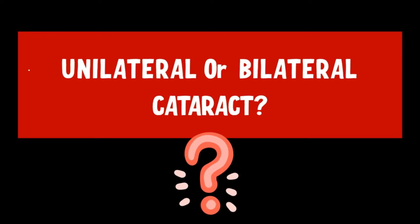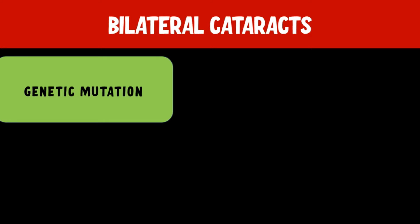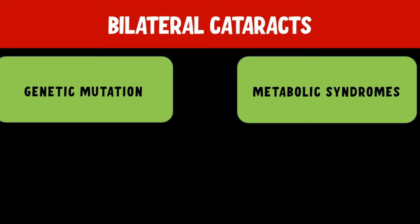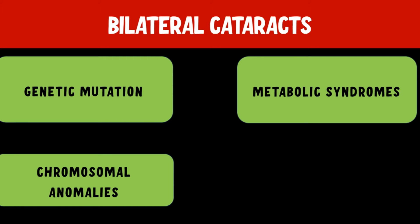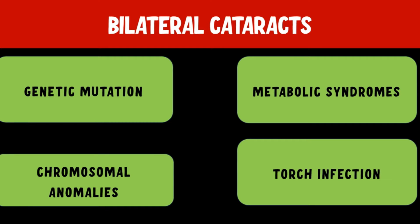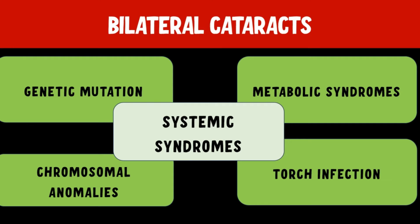Having understood clearly the etiologies of the unilateral cataracts, now let us move to the bilateral cataract and their etiology. If one sees a child with bilateral cataract, one needs to think about the following broad categories: cataracts because of genetic mutation, metabolic syndromes, cataracts because of chromosomal anomalies, TORCH infection, and various systemic syndromes leading to bilateral cataracts.